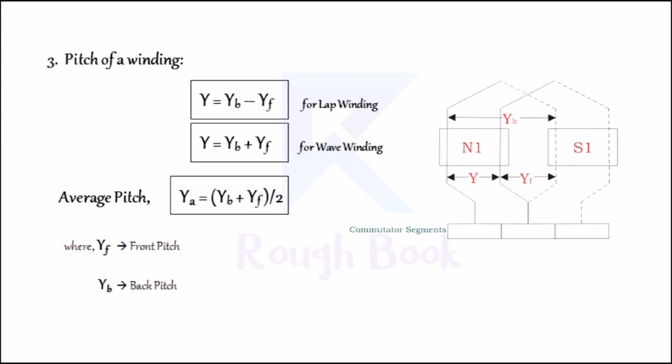Number three: Pitch of a winding. Pitch of a winding is the distance around the armature between two successive conductors which are connected together. For lap winding, Y = YB − YF as shown in the figure. For wave winding, Y = YB + YF. For average pitch, YA = (YB + YF) / 2, where YF is the front pitch, which is the length of the front end of the armature connection measured in terms of number of armature conductors, and YB is the back pitch, which is the distance measured in terms of armature conductors that a coil advances at the back of the armature.